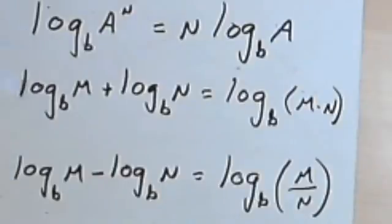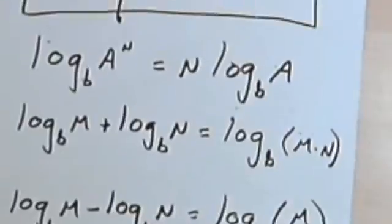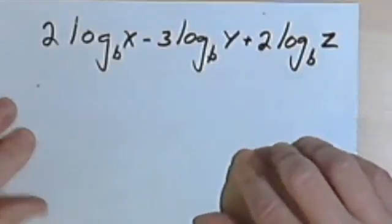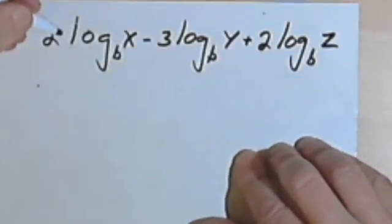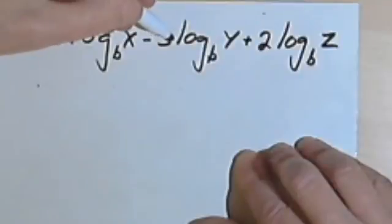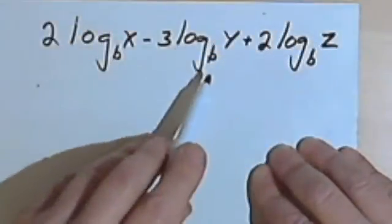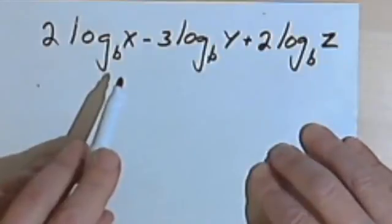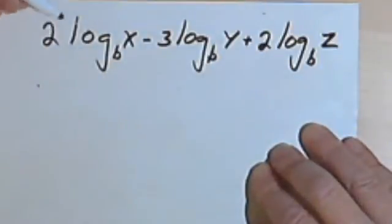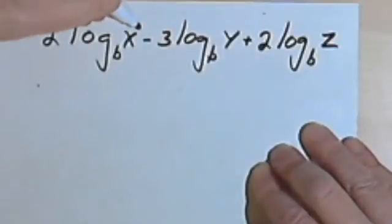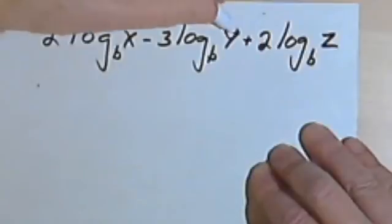So let's take these three properties and look at some logarithmic expressions and see how they can be rewritten. Here I've got this expression: 2 log base b of x, minus 3 log base b of y, plus 2 log base b of z. The first thing I see is they all have the same base, so I'll be able to combine them. Since they all have coefficients, I'm going to use the power property first.